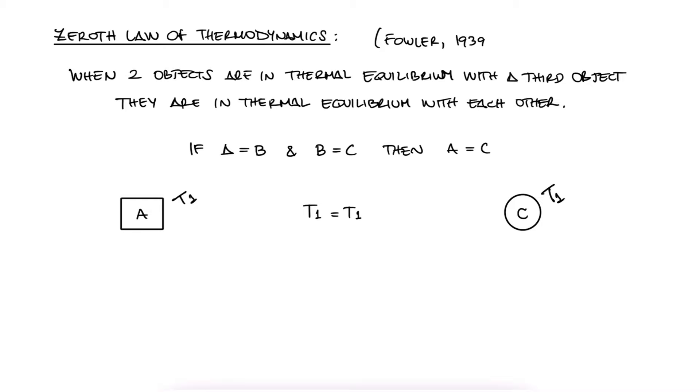This law was established in 1939 by Ralph Fowler. It was formulated 89 years after the first and second law were established, but it was already being used empirically and should have been established long before the second and first laws, and that's why it was labeled the Zeroth law.